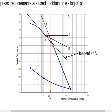You have a consolidation curve (normal consolidation curve) and an expansion stage after load removal. First, identify the curved portion of this graph with the highest curvature. Draw a tangent to the curve at that point of maximum curvature such that it meets at a point A.